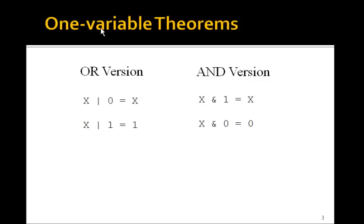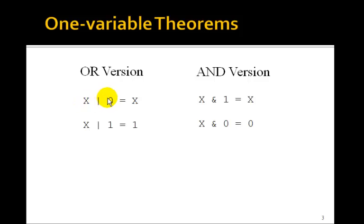Let's look first at one-variable theorems. We know, for example, that x OR 0 is equal to x. You can check all these by just letting x be 0 or 1: 0 OR 0 is 0, 1 OR 0 is 1. So this is clearly true — OR anything with 0, you get the anything.